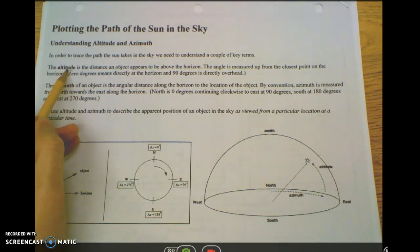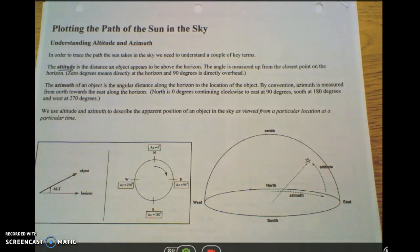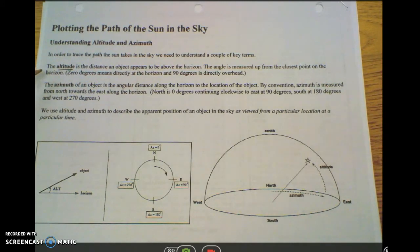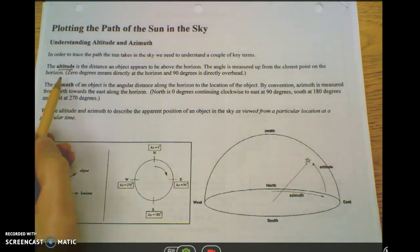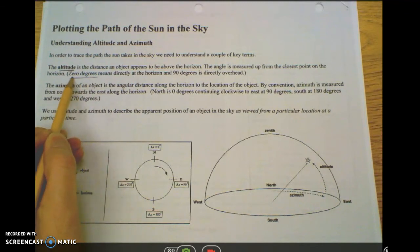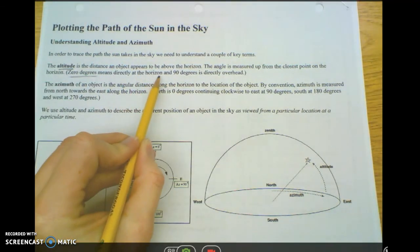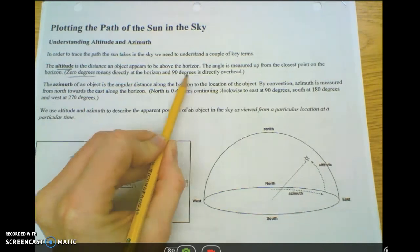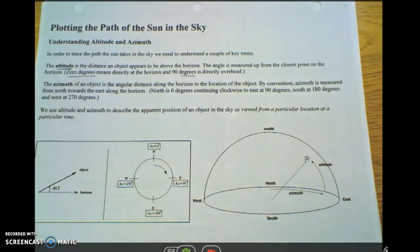The first is altitude. When you're looking at the sun's path or any object in the sky, the altitude is the object's distance up from the horizon, and it's always measured in an angle. So zero degrees is the angle of the horizon itself, and if the object is directly overhead, then it's going to be at 90 degrees. That's as high as you can go, and that's if the object is directly overhead.